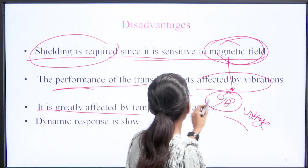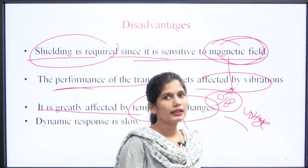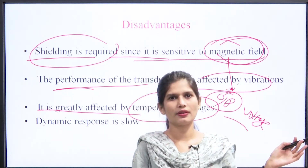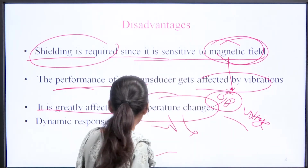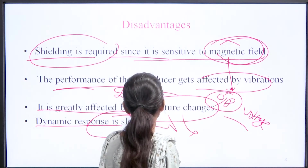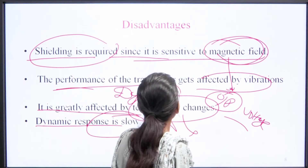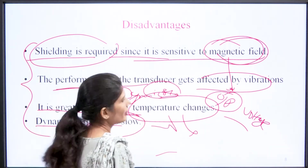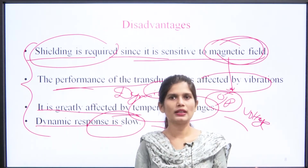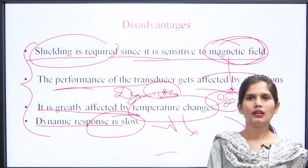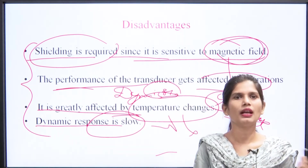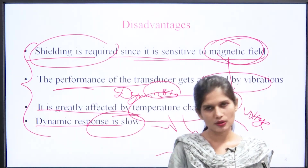Third disadvantage: it is greatly affected by temperature changes — it is sensitive to temperature variations. Fourth: dynamic response is slow. So the disadvantages include: shielding required, performance affected by vibrations and shocks, temperature dependent, and slow dynamic response.